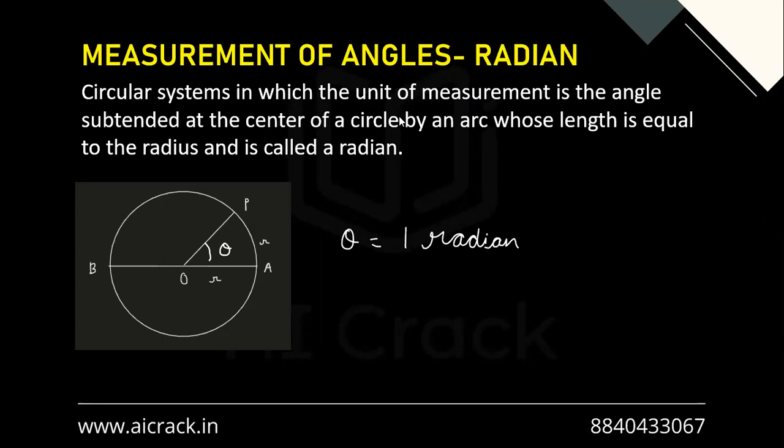Another measurement system is radian, which is the circular system. The unit of measurement is the angle subtended at the center of a circle by an arc whose length is equal to the radius, and that angle is called a radian. So basically, if this is our circle with center O and radius R, and we draw an arc AP whose length equals R, then the angle subtended at the center is one radian.